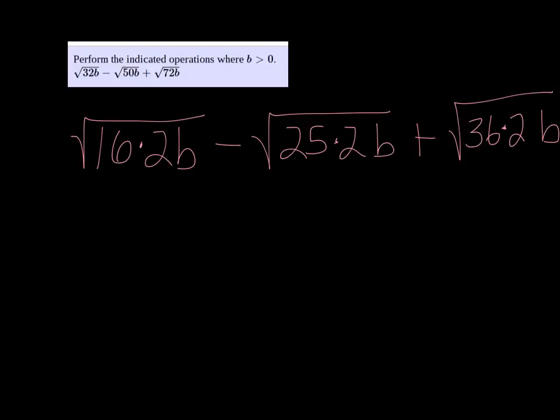And now if I take out the perfect squares, I get 4 square root of 2B minus 5 square root of 2B plus 6 square root of 2B.